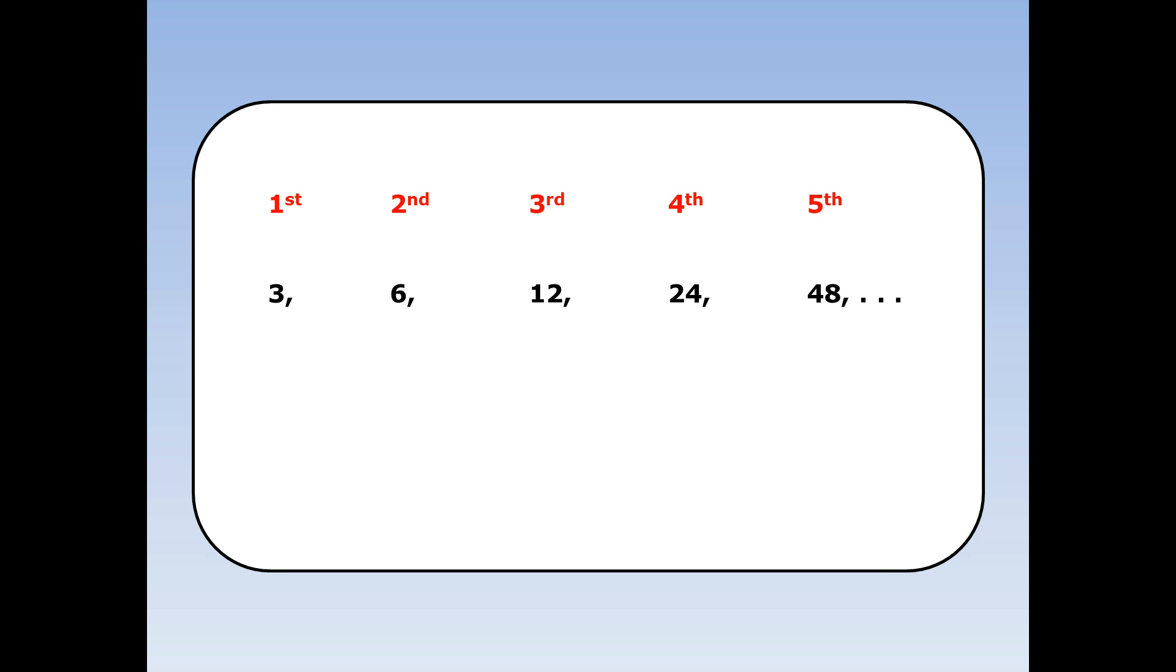Look at this sequence: 3, 6, 12, 24, 48. The first term is 3. The second term is 3 times 2 to the 1. The third term is 3 times 2 squared, and the fourth term is 3 times 2 cubed.